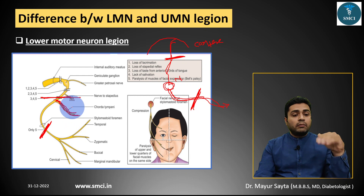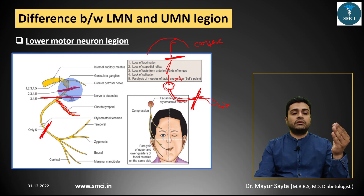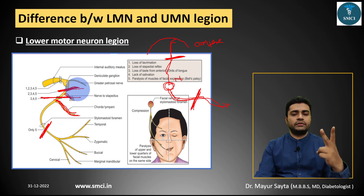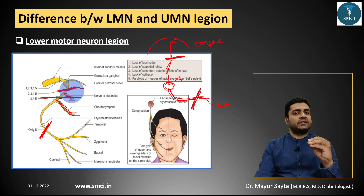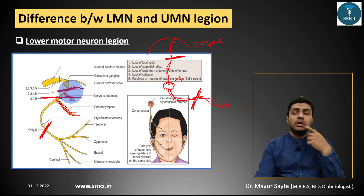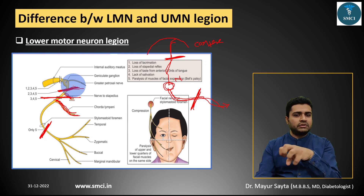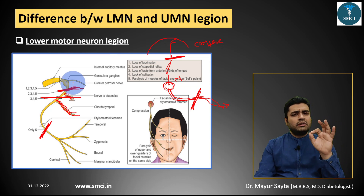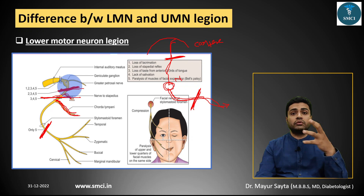If the lesion is above the nerve to stapedius, the features are Bell's palsy facial muscle problems, plus taste sensation loss, plus a third extra feature: hyperacusis. The nerve to stapedius supplies the stapedius muscle, which pulls the stapes out of the oval window during the stapedial reflex — dampening loud sounds. If this nerve is damaged, the stapedial reflex is lost and the patient hears sounds as abnormally loud — that is hyperacusis.